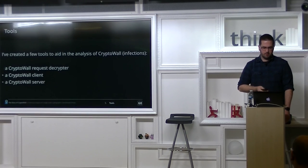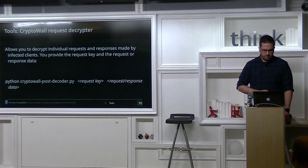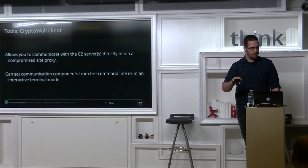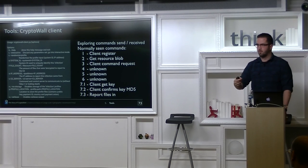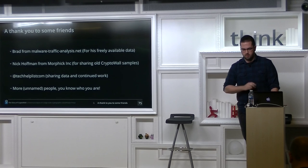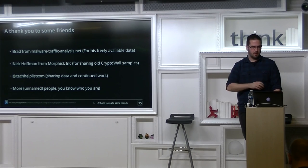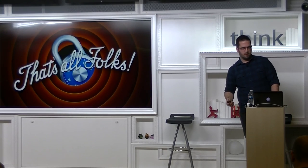I've made a few tools: a request decrypter (client and server). I'm not going to release the server because I don't want to release something that allows you to patch old samples and run your own ransomware operation — I don't like open-source ransomware. The client decryptor lets you decrypt requests and responses, getting the POST location key and parameter key. There's also a Python client to communicate interactively with proxies or backend servers to explore command IDs. It's currently broken because of 4.0 but will be fixed and published on GitHub tonight. Thanks to Brad from malware traffic analysis, Nick Hoffman for sharing old samples, and Tech Helplist on Twitter.